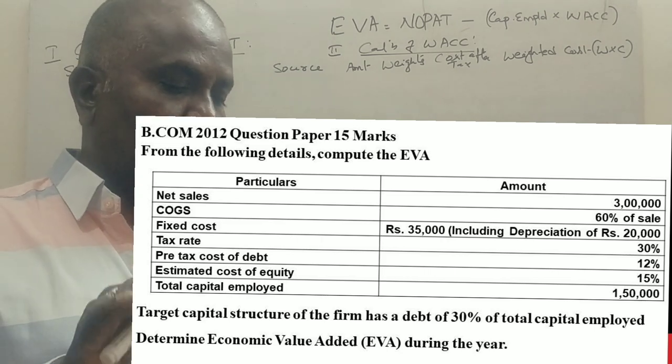Net Sales 3 lakhs, Cost of goods sold 60% of sales, Fixed Cost Rs. 35,000 including Depreciation of Rs. 20,000, Tax Rate 30%, Pre-Tax Cost of Debt is 12%, Estimated Cost of Equity is 15%. Total Capital Employed is 1,50,000.